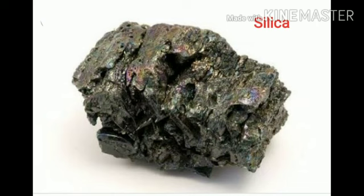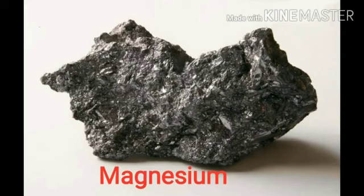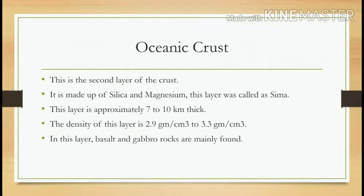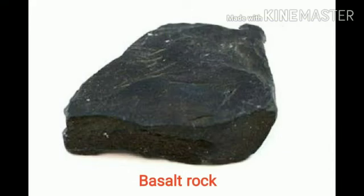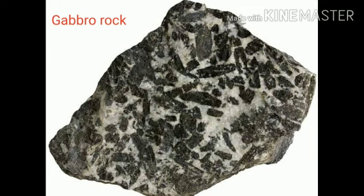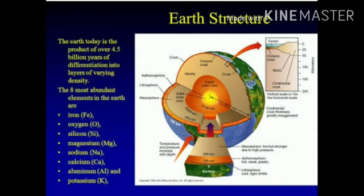Oceanic crust is the second layer of the crust. It is made up of silica and magnesium, and was called sima. This layer is approximately 7 to 10 kilometers thick. The density of this layer is 2.9 to 3.3 grams per cubic centimeter. In this layer, basalt and gabbro rocks are mainly found.